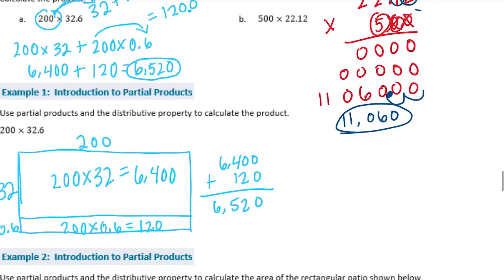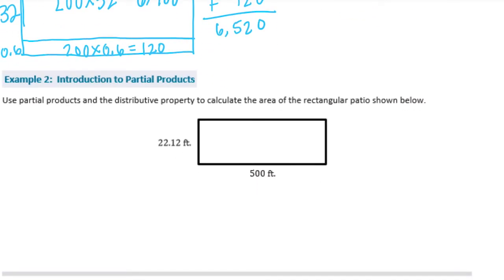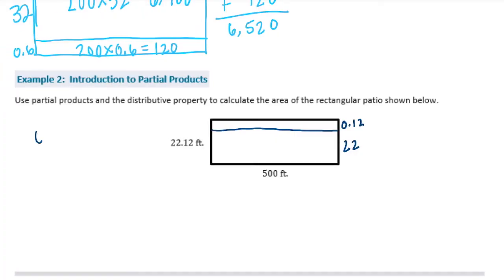Now let's connect that to the partial product method on example 2. We're using partial products and the distributive property to calculate the area of the rectangular patio shown below. I'm going to separate it here into 0.12 feet and 22 feet. If I do 0.12 times 500, I get 0's in the first two rows. Two 0's down, 5 times 2 is 10, carry the 1. 5 times 1 is 5 plus 1 is 6. We could have known that 5 times 12 is 60 and gotten 60 feet from that.